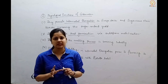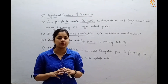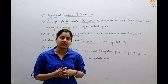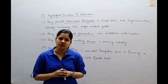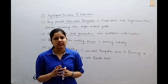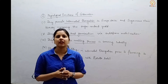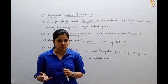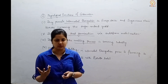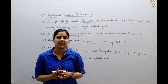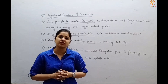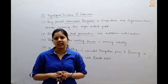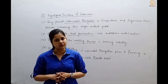In this lecture we have dealt with the physiological activities of two hormones: auxin and gibberellin. In the next lecture, we will be discussing the remaining hormones — cytokinin, ethylene, and abscisic acid — covering their physiological functions, roles, and site of action. Thank you.